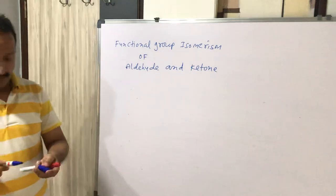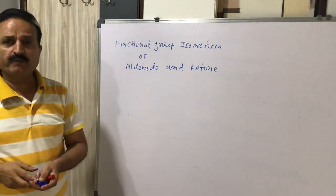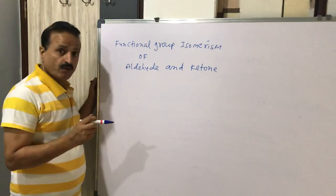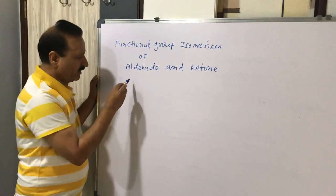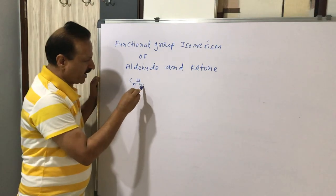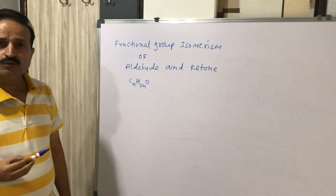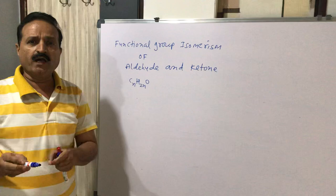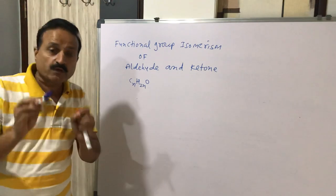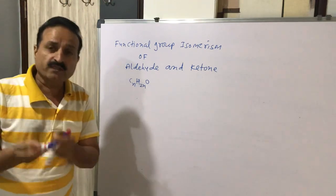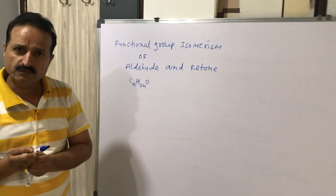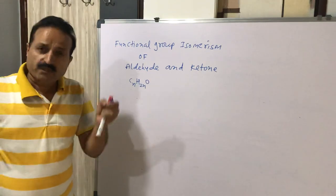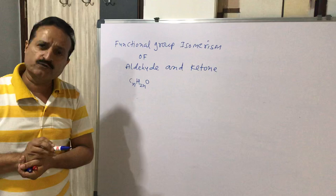Why are aldehyde and ketone functional group isomers of each other? Because aldehyde and ketone have a common molecular formula — it is CₙH₂ₙO. Functional group isomerism means the molecular formula is common but the functional groups are different. So aldehyde and ketone, having the same common molecular formula, are functional group isomers of each other.